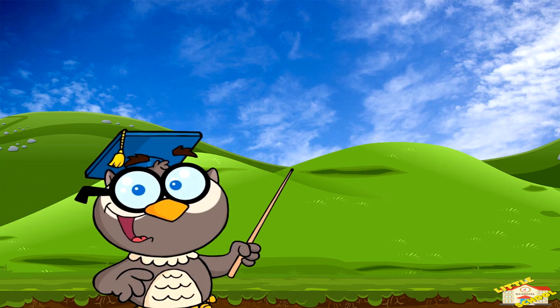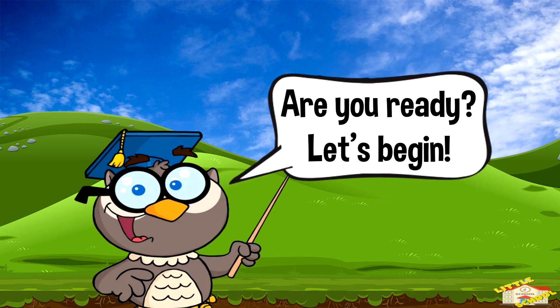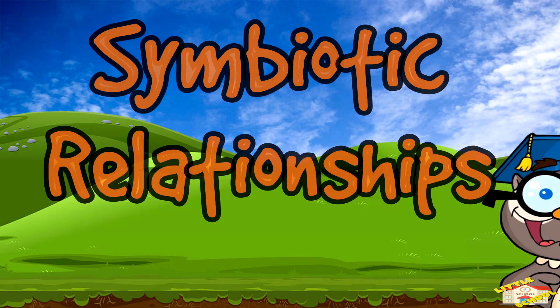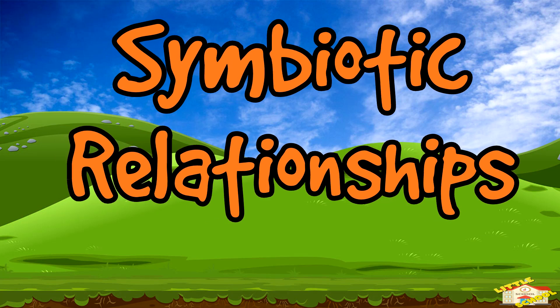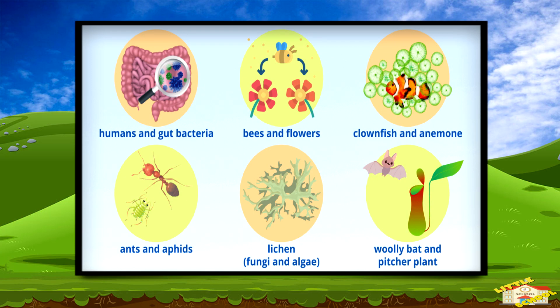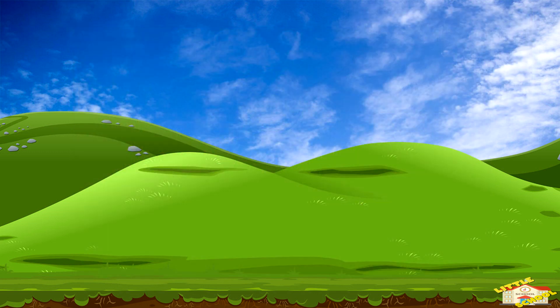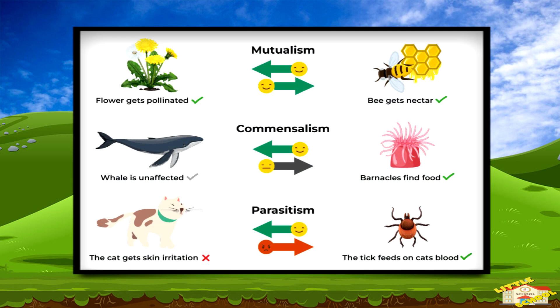Hey kids, in today's video we'll be learning about symbiotic relationships. Are you ready? Let's begin! Symbiotic relationships are like partnerships between living things. These partnerships happen when two different species live close together and interact with each other. There are three main types of symbiotic relationships: mutualism, commensalism, and parasitism.